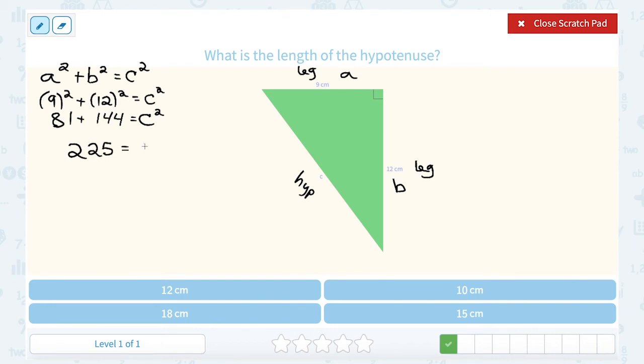So 225 is equal to c squared. To get c by itself, well the opposite of squaring something is taking the square root. Take the square root of both sides. Now the square root of 225 is 15. And I know it's going to be positive 15 because it's a side length on a triangle. And the square and square root cancel out leaving me with c. So c must be 15 centimeters.